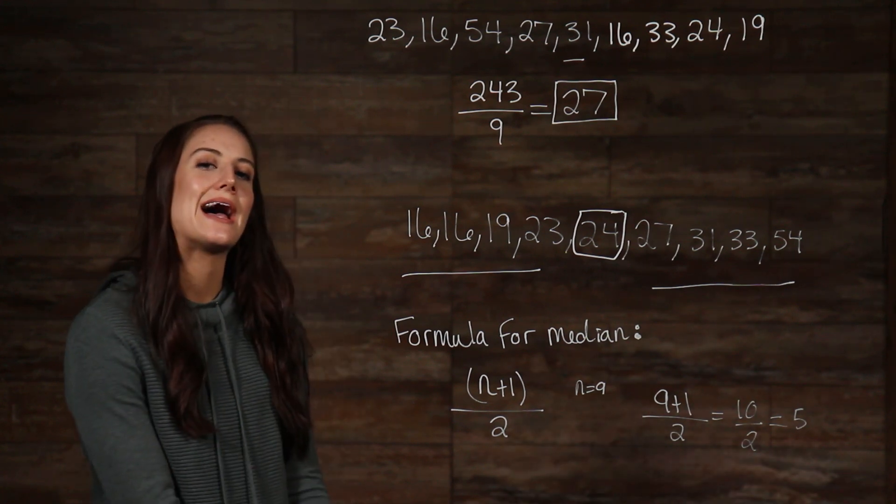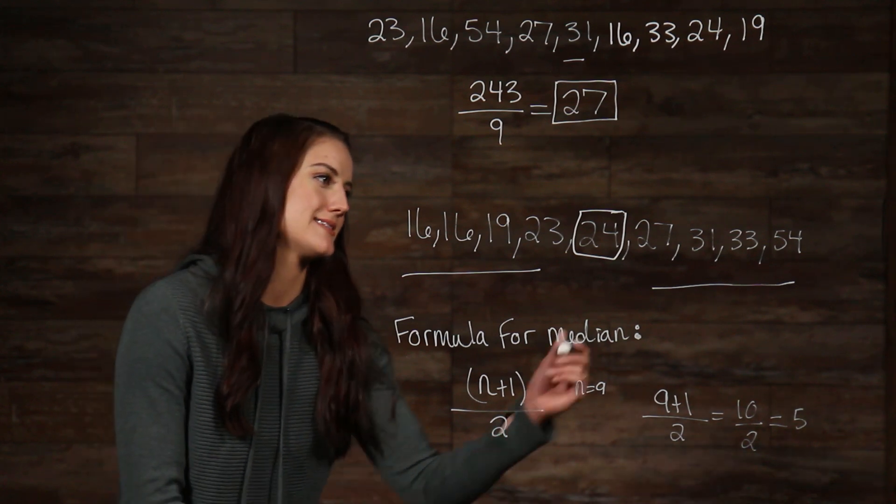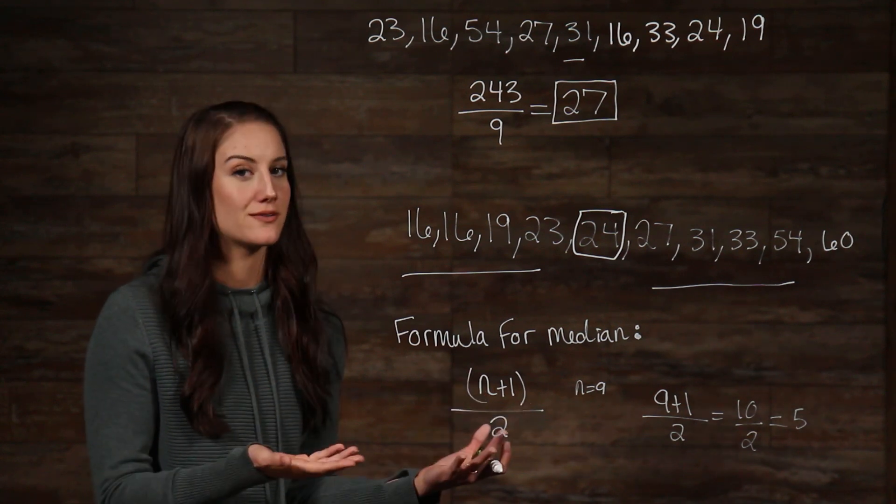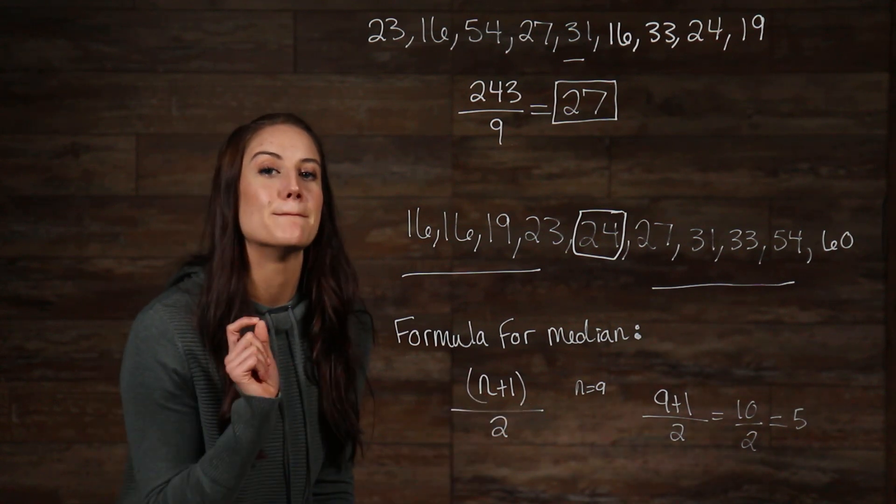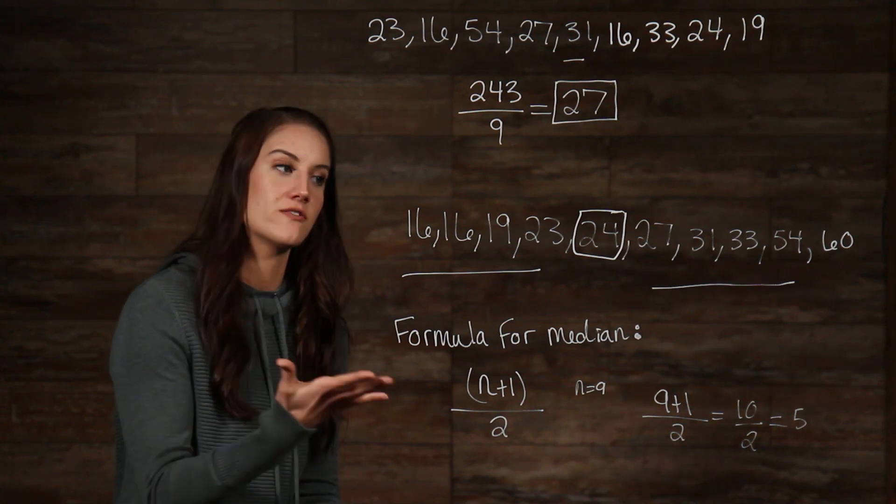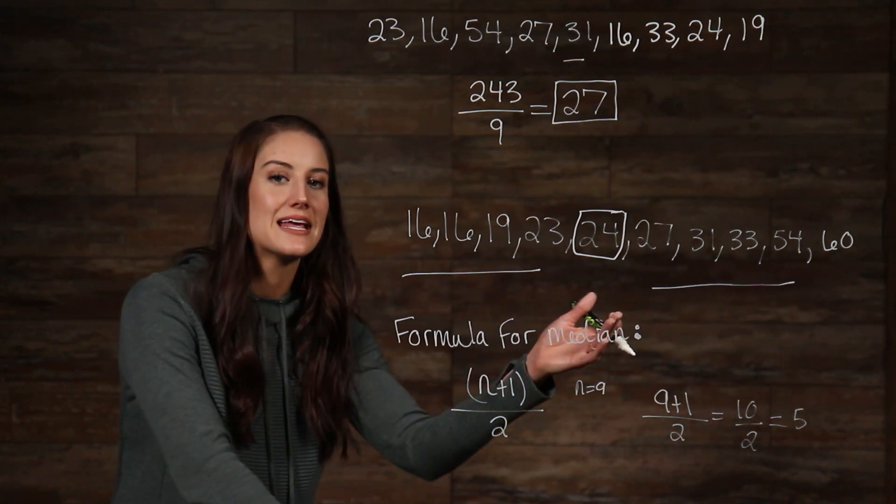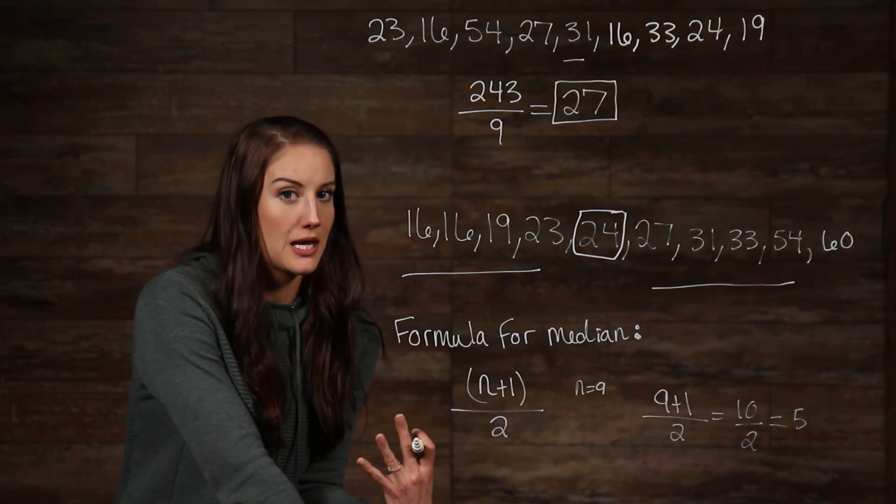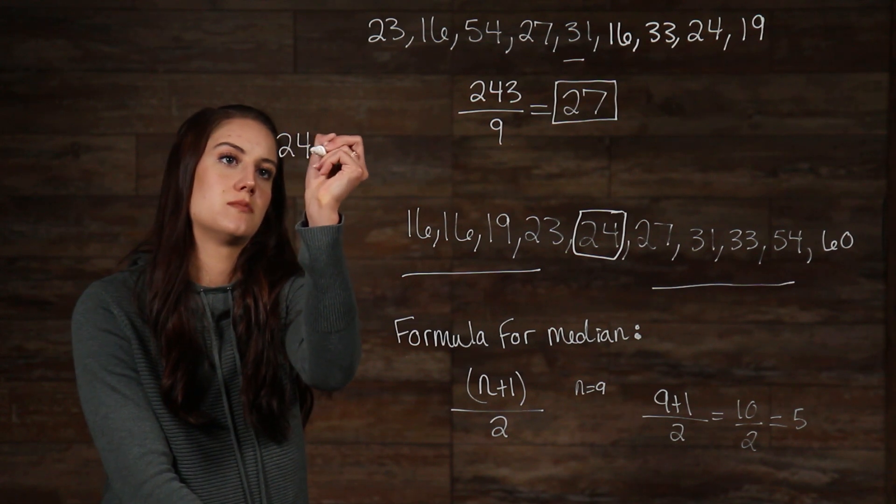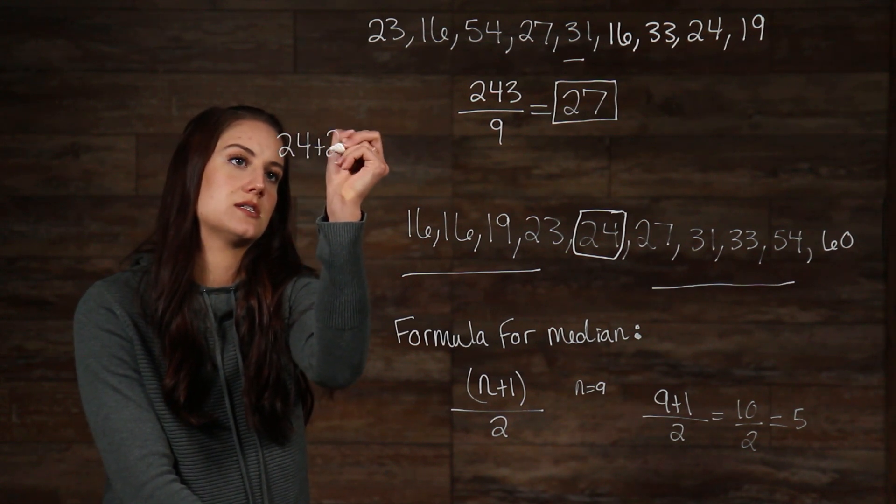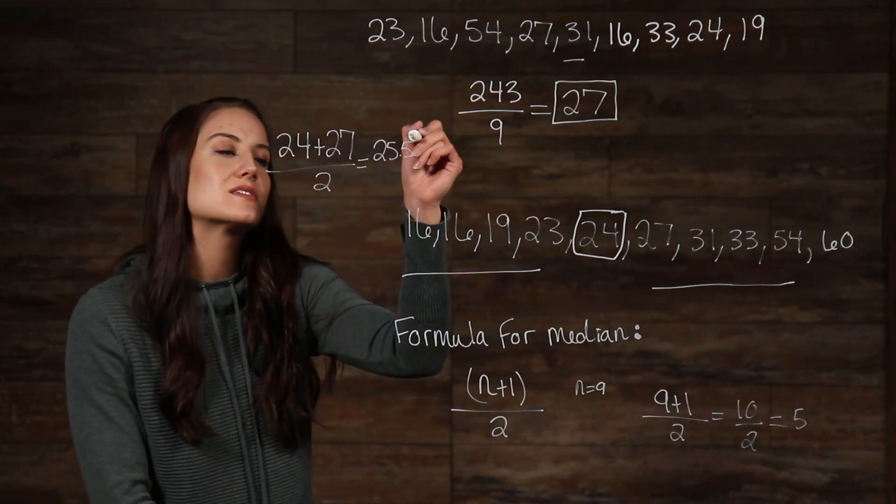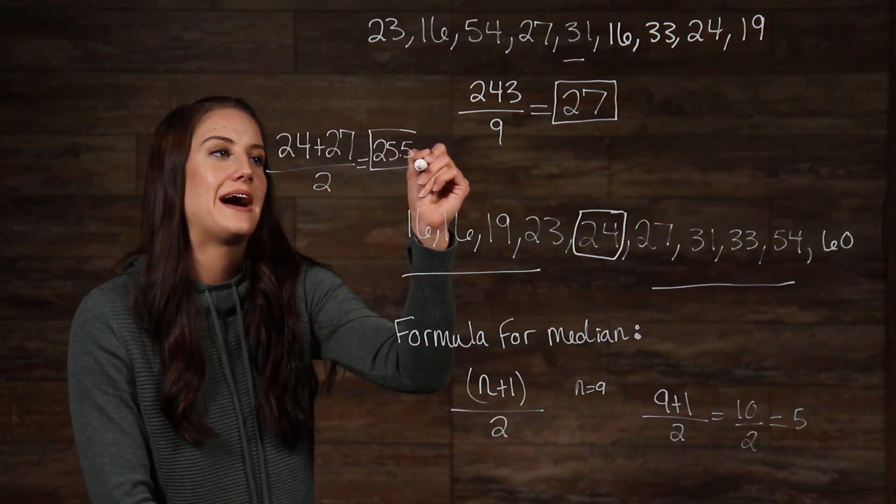So, let's just add a number onto our list of 9 numbers. Let's say 60. So, now we have 10 numbers, which is an even amount of numbers. So, we need to take the mean of the fifth and sixth numbers. So, we take the sum of 24 and 27, then divide by the amount of numbers that we are summing, which, in this case, is just 2. So, we have (24 + 27)/2. So, this makes 25.5 our median.